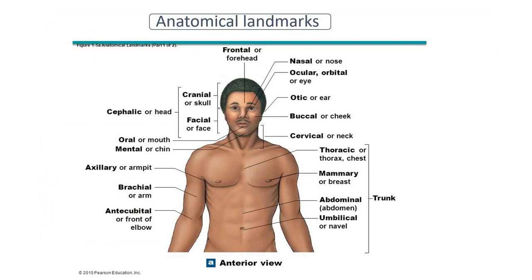Now let's go to anatomical language. There are a lot of new words because we are learning a new language — this is the universal language for doctors, nurses, physiotherapists, and all medical professions. Now let's talk about anatomical landmarks, part by part. Let's take the head — cephalic means the head. The head can be divided into the skull, called cranial, and the face, called facial. The forehead is called the frontal area. The nose is called nasal.